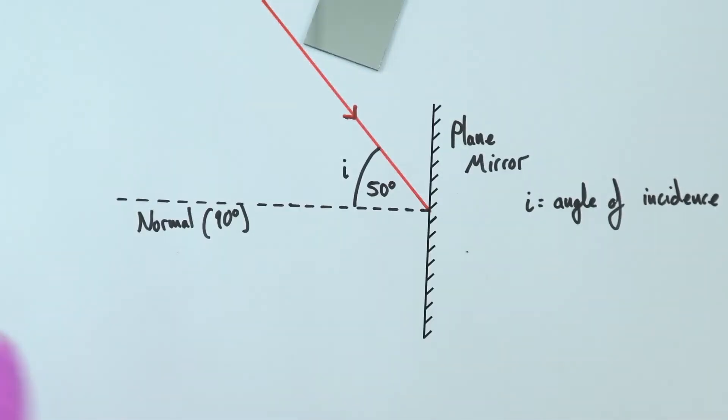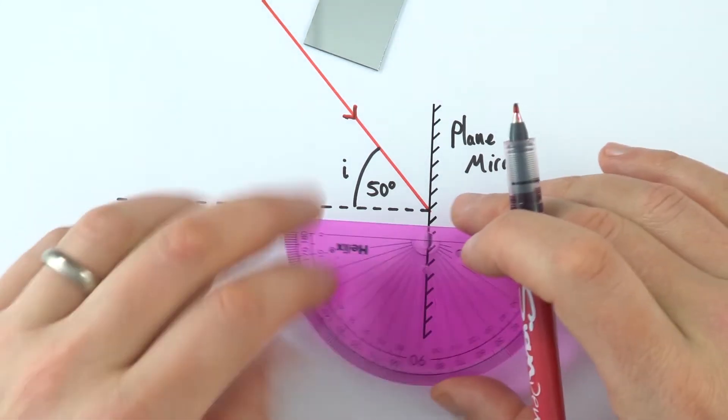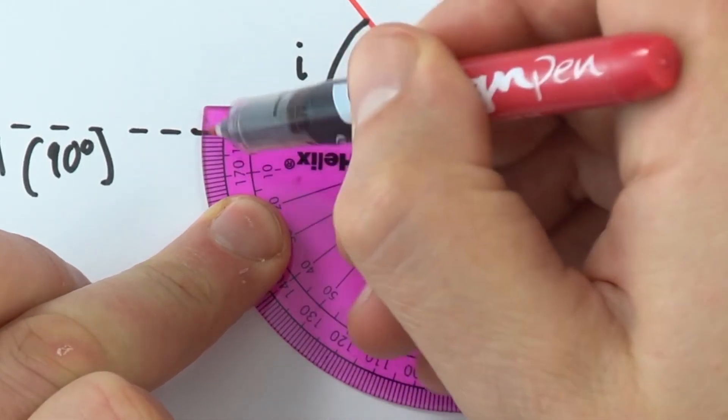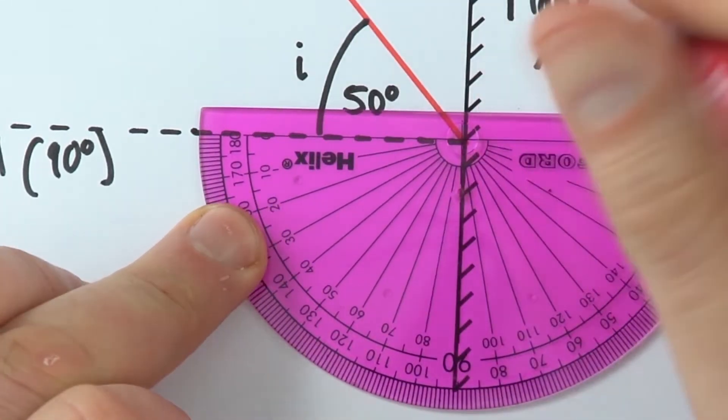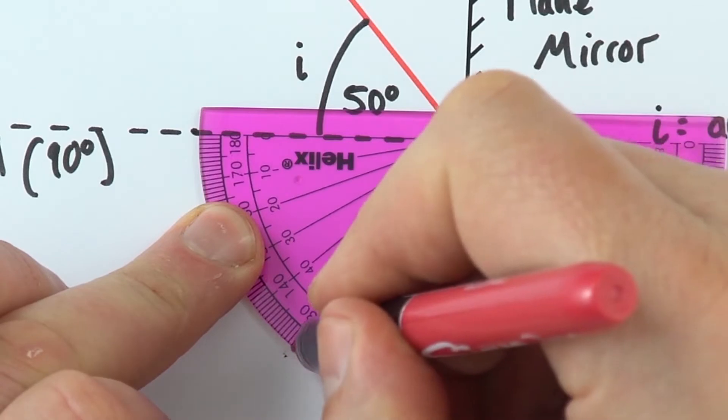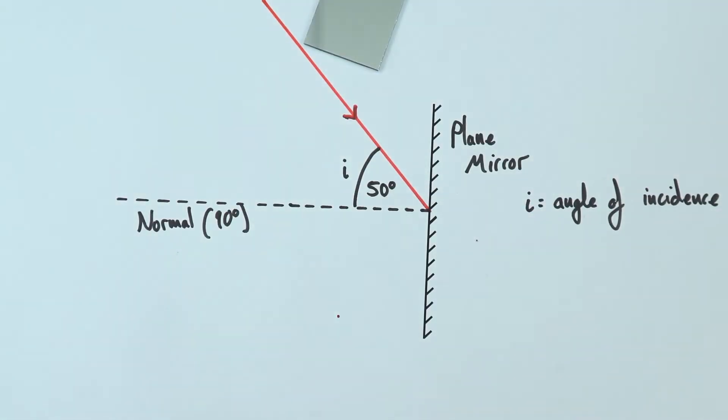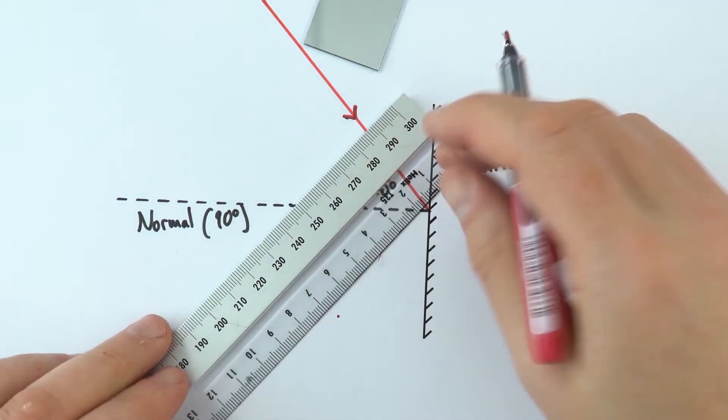So for me to draw that in, I'm just going to again get my protractor. I'm going to measure 50 degrees from this normal line, so that's 10, 20, 30, 40, 50—or 130 degrees. If I just put that line in there, I can then draw in the reflected ray.